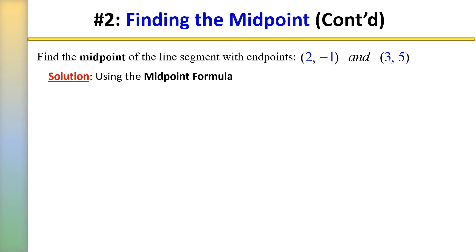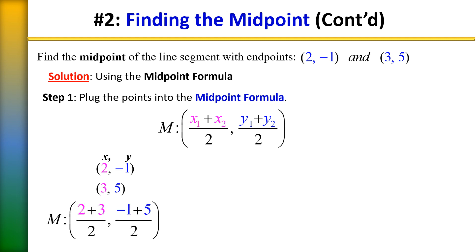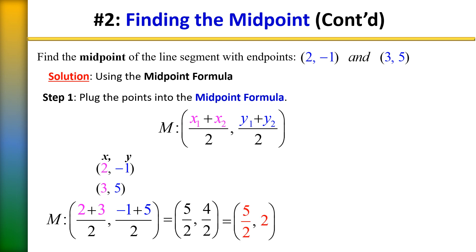Here's how we found the midpoint: take the two given points and plug them into the midpoint formula. Add your x-values and divide by 2; add your y-values and divide by 2. Our x-values: 2 plus 3 equals 5. For the y-values, the signs are different — subtract, take the sign of the larger number — giving 4 on top. So we have 5 halves comma 4 over 2. The y-value simplifies: 4 divided by 2 equals 2. Our midpoint is 5 halves comma 2.